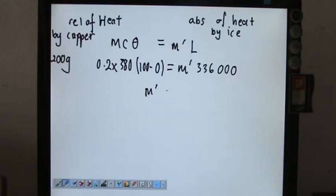So we can calculate this M by doing the calculation of 100 times 0.2 will be 20 times 380 over 336,000. You can cut, cut, cut, but still you have to use your calculator.